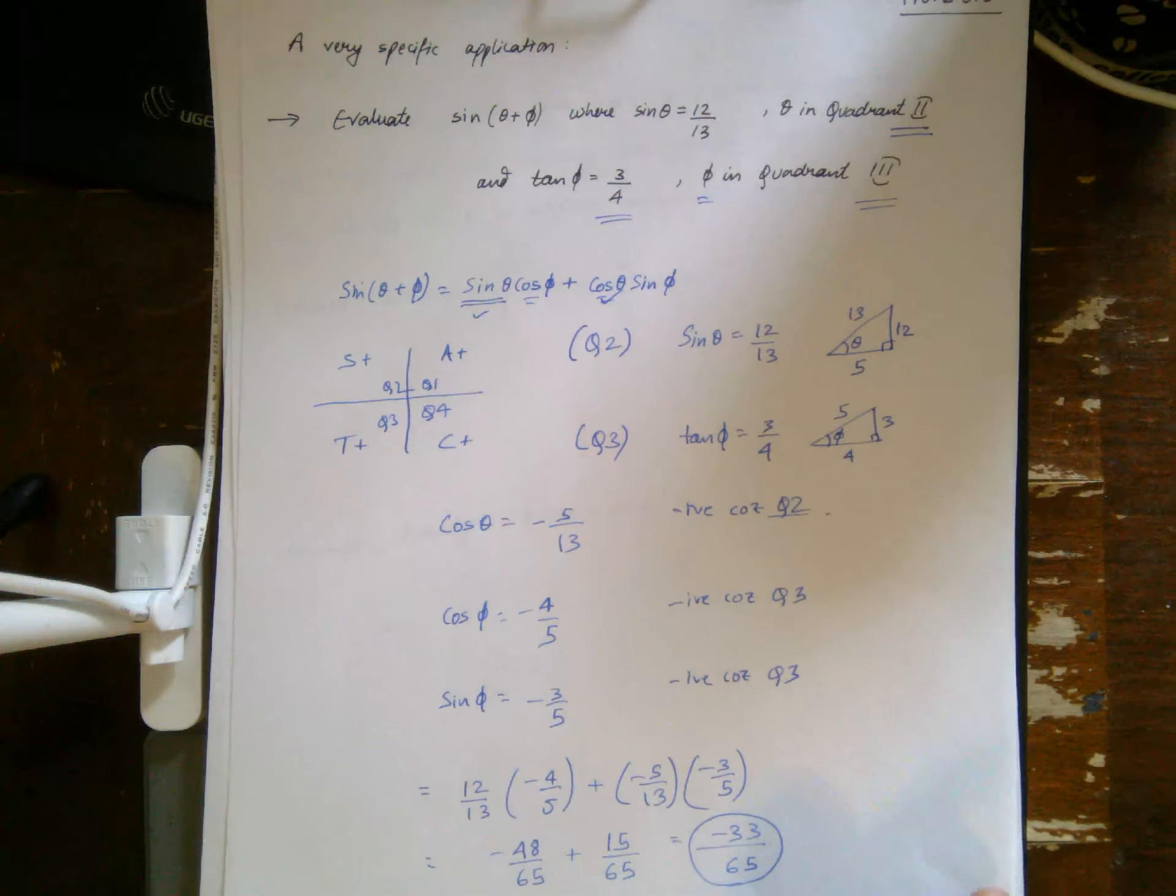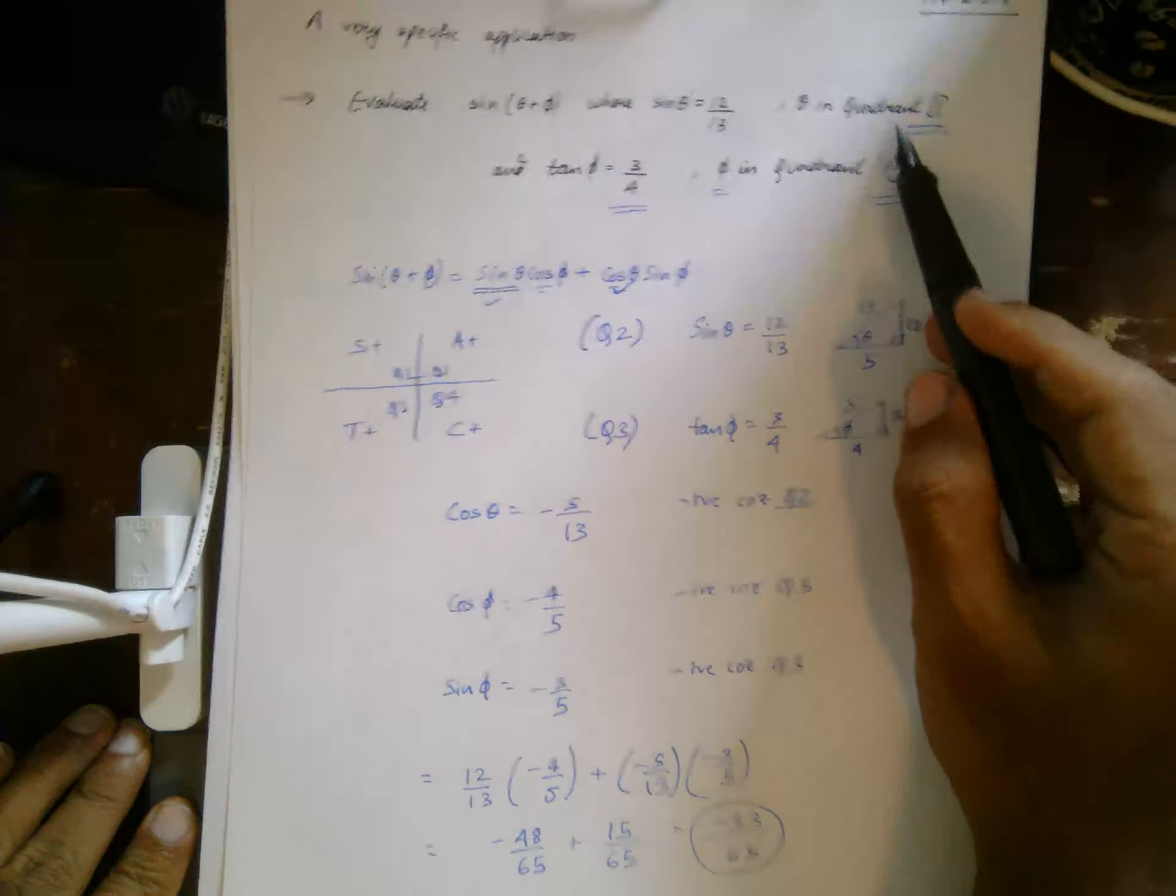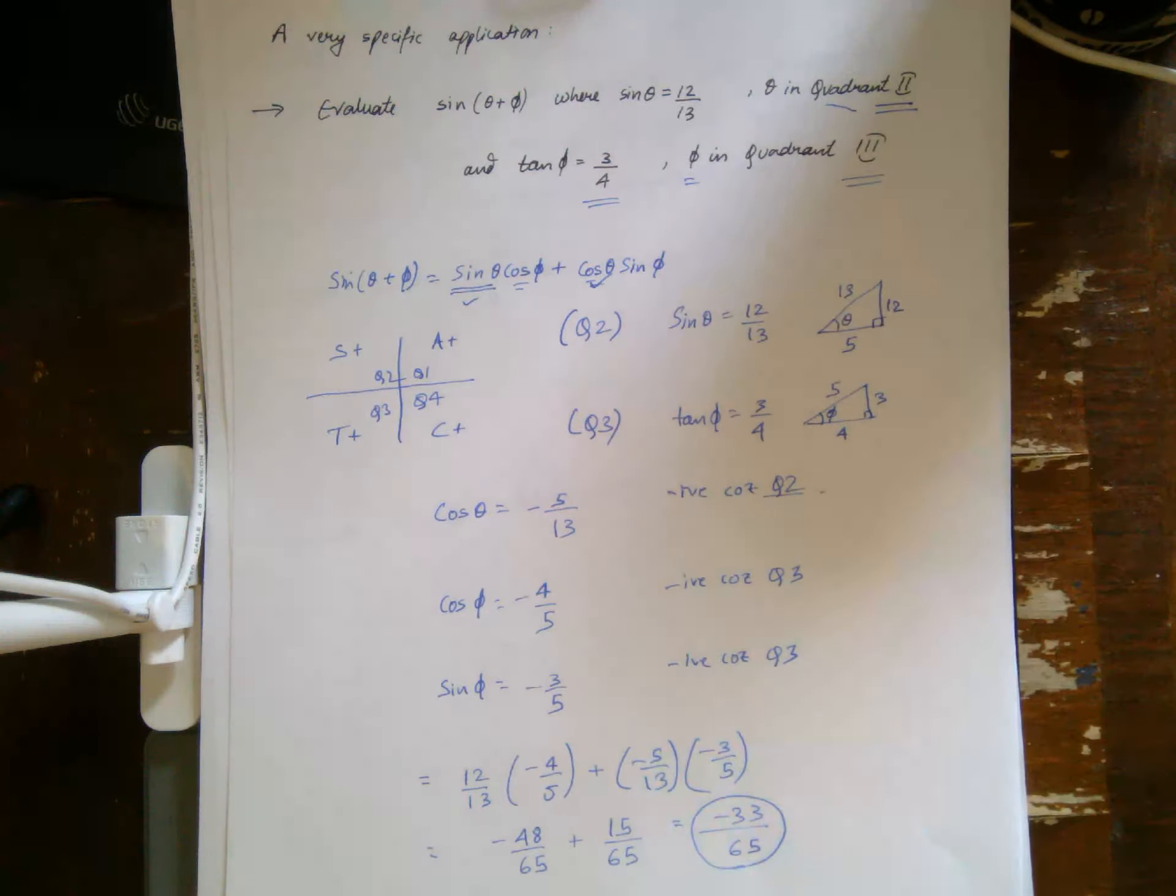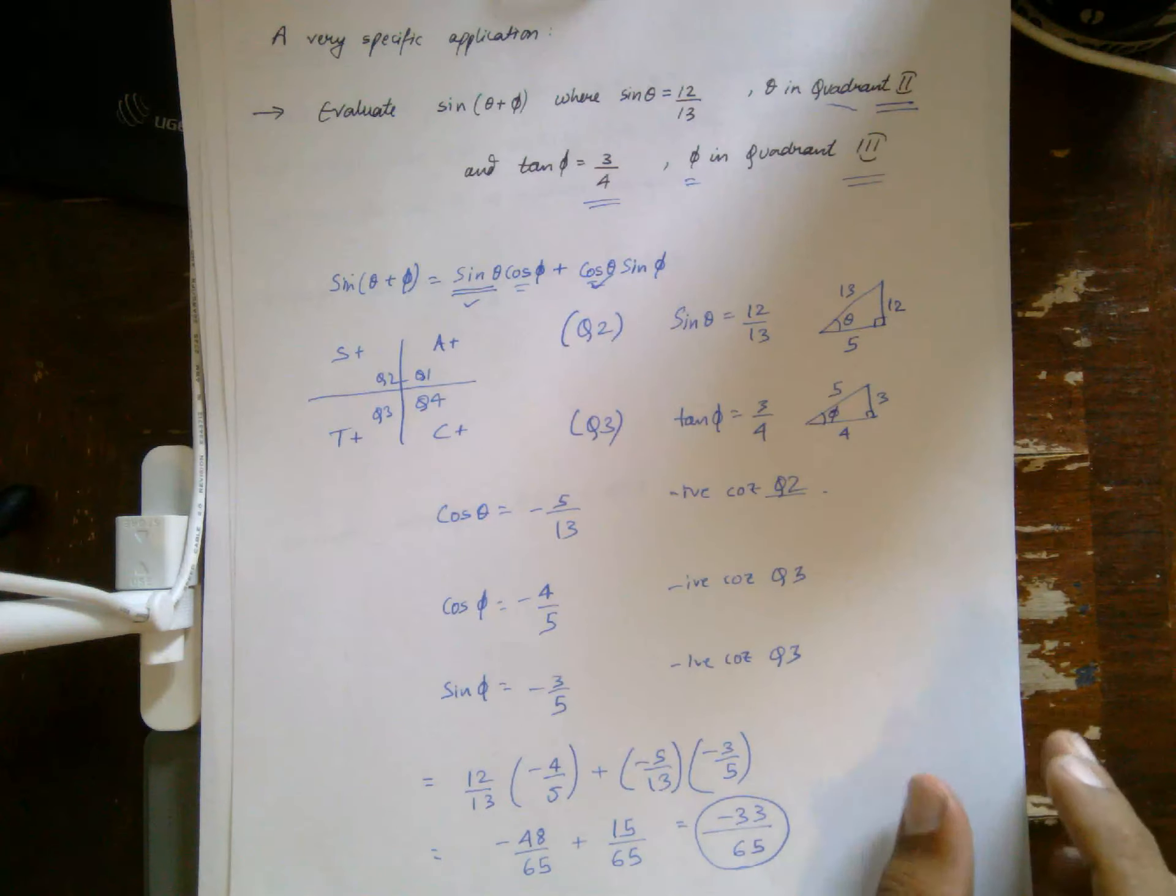So in this specific example, if you are given additional information about quadrants, you have to be a little careful about the sign. As in, you have to be careful about whether in that particular quadrant the ratio you're working with is positive or negative.